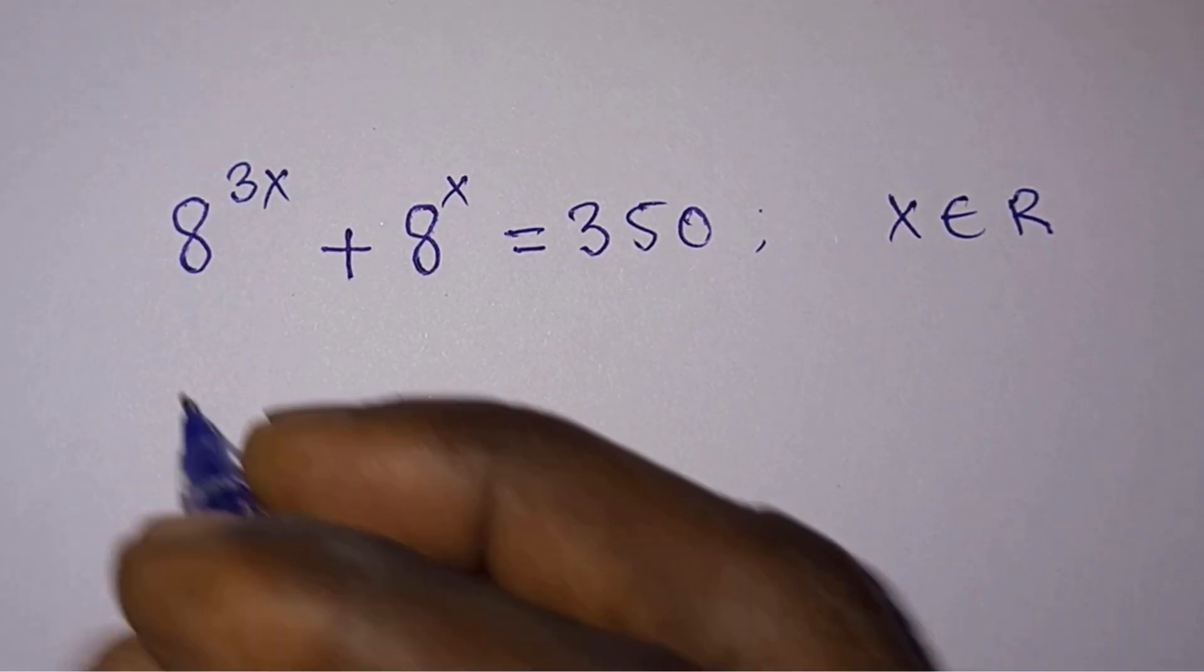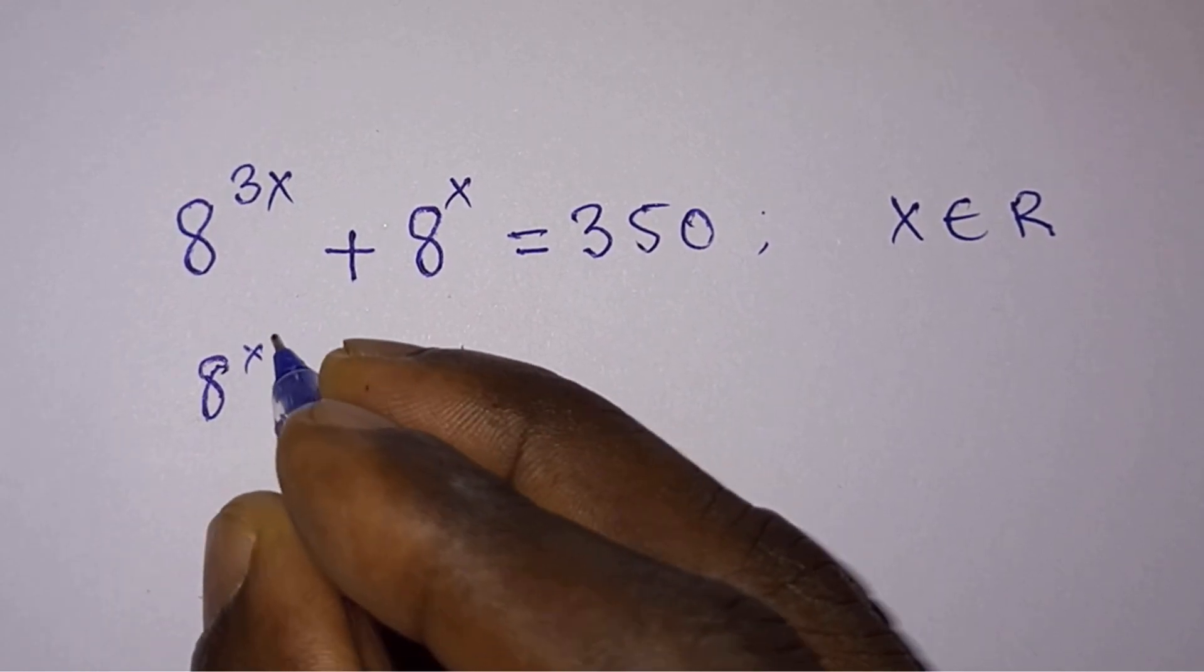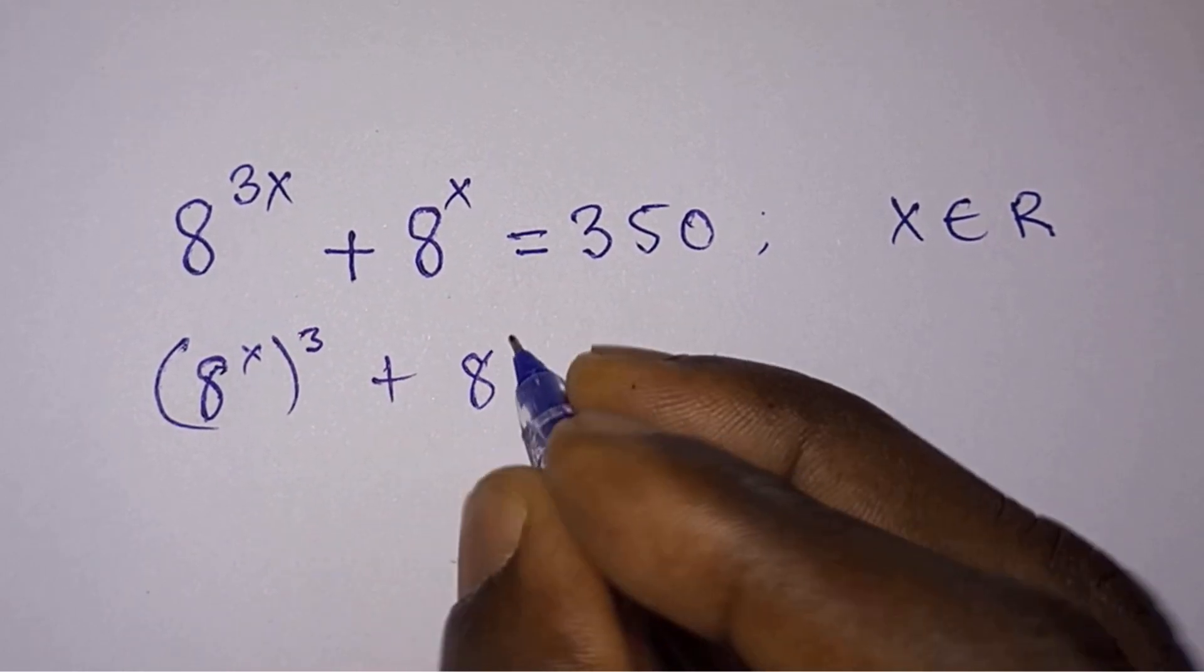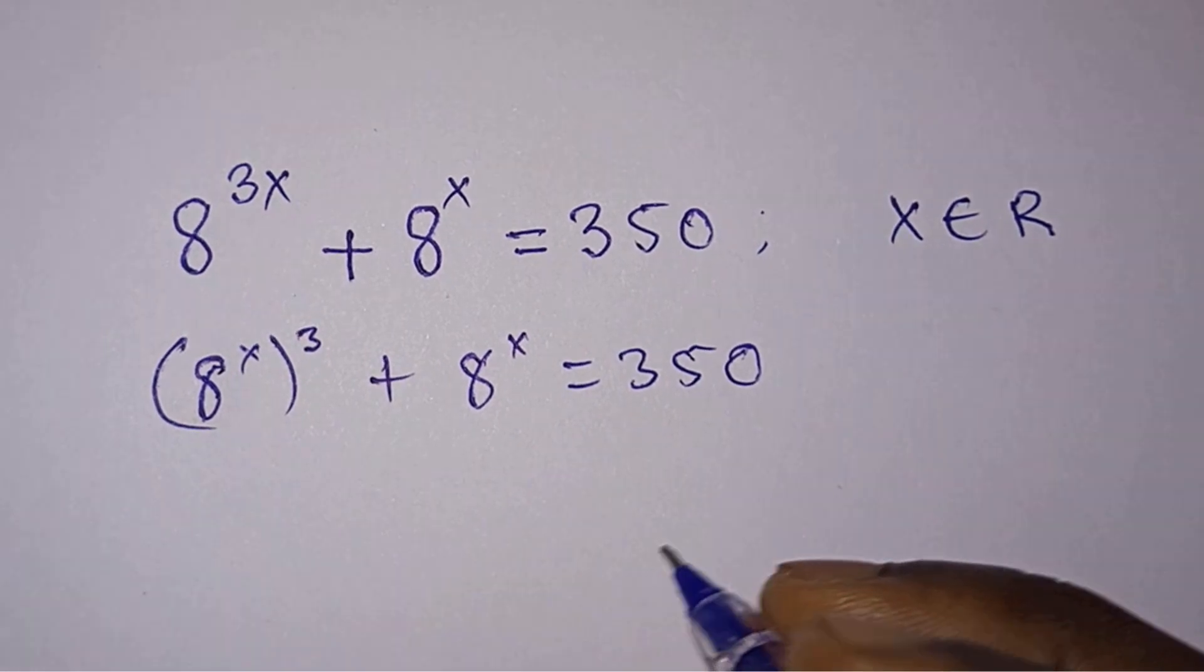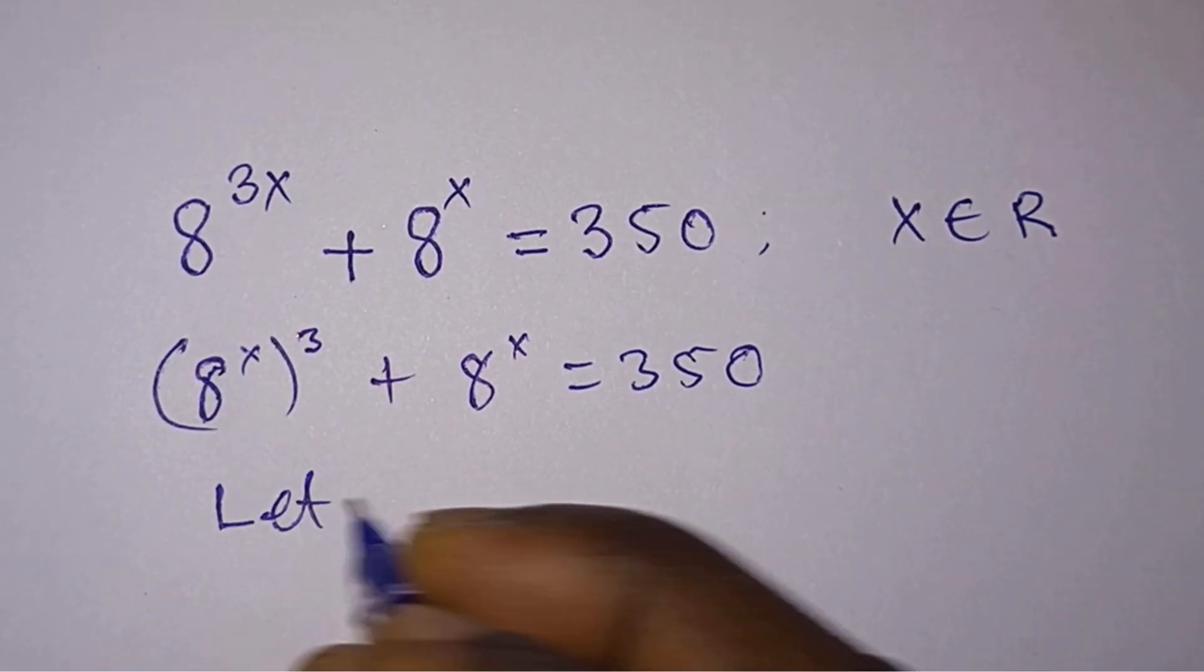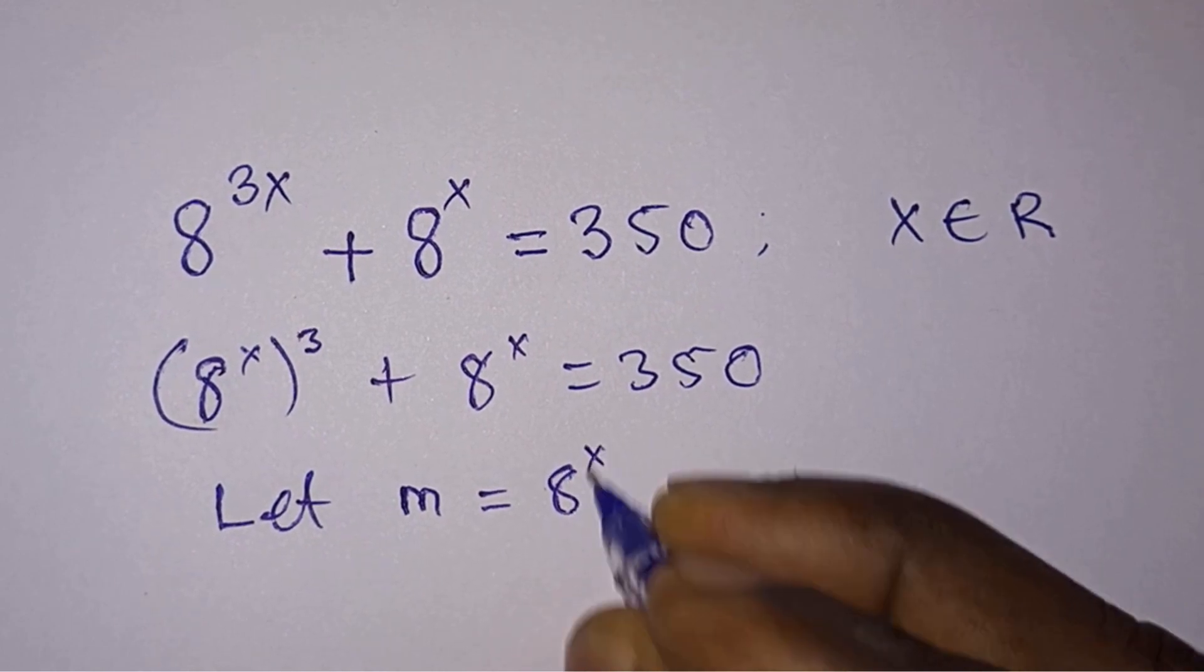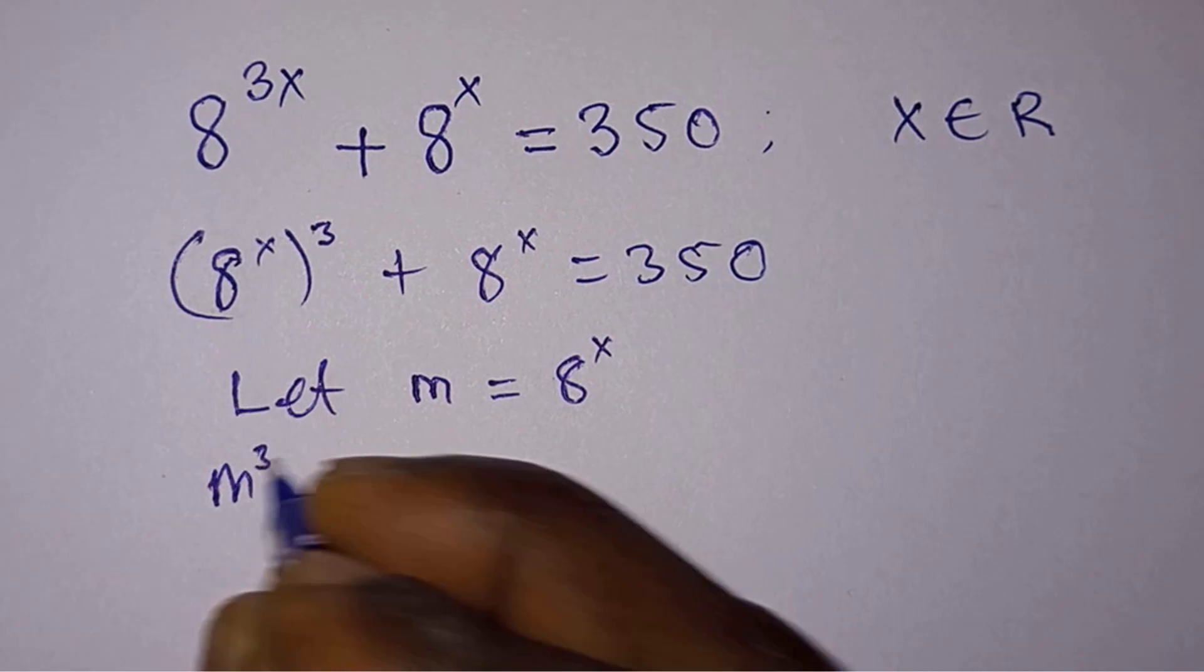Let's get started. We write this 8 to the power 3x as 8 to the power x to the power 3, plus 8 to the power x is equal to 350. Then we will let m equal to 8 to the power x, so the equation now becomes m to the third power plus m is equal to 350.